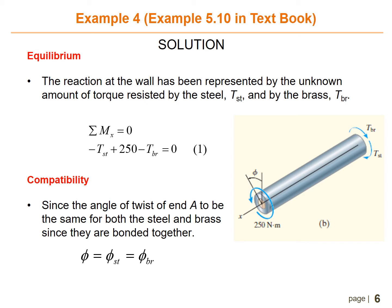First, find the equilibrium. The reaction at the wall is represented by the unknown torque resisted by the steel, T_st, and by the brass, T_br. Using the equilibrium equation summation of Mx equals zero, the moment equation is: negative T_st plus 250 minus T_br equals zero. This is equation number one.